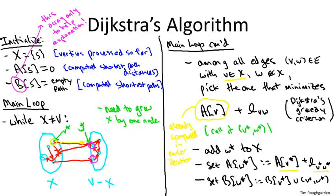When I previously explained this algorithm, I used two arrays: array A to compute shortest path distances, and array B to keep track of the shortest paths themselves. However, we don't actually need array B — when we fill in array A, we never refer to B. For real implementations of Dijkstra's algorithm, we cross out all instructions corresponding to array B and just fill in the shortest path distances themselves.